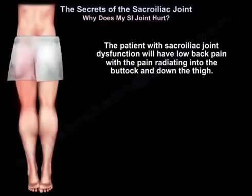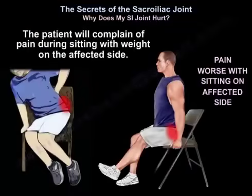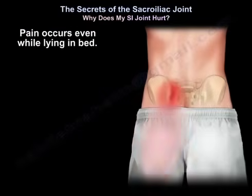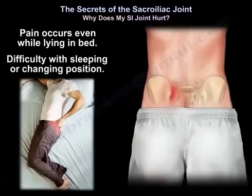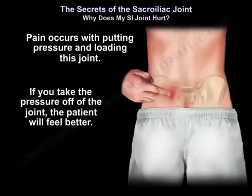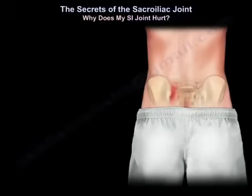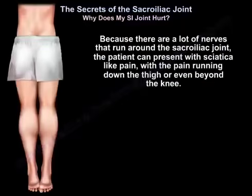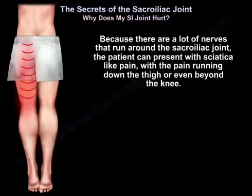The patient with sacroiliac joint dysfunction will have low back pain that radiates into the buttock and down the thigh. They will complain of pain during sitting with weight on the affected side, pain with stepping up or going upstairs, pain even lying in bed, and difficulty sleeping or changing position. Pain occurs with loading the joint, and taking pressure off the joint provides relief. Symptoms can sometimes mimic a herniated disc or compressed nerve, and because many nerves run around the sacroiliac joint, the patient can present with sciatica-like pain running down the thigh or even beyond the knee.